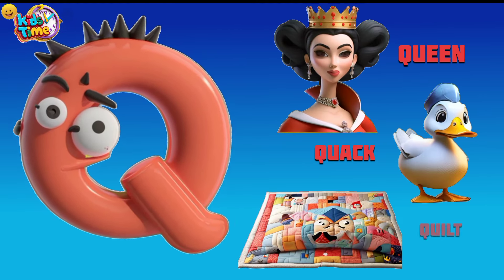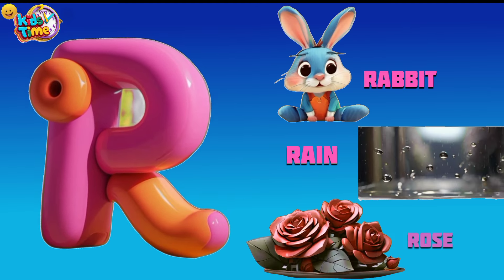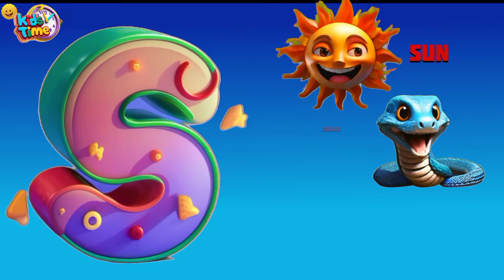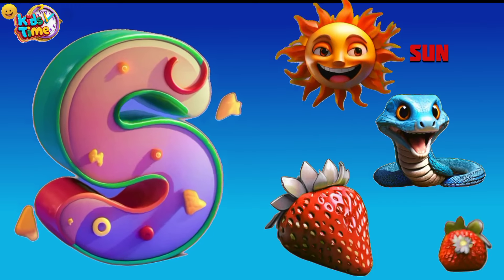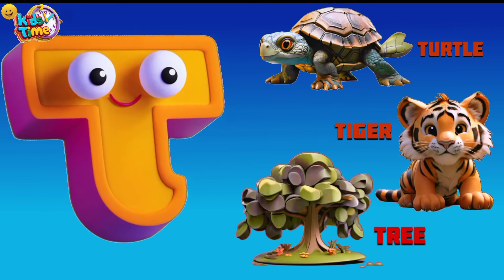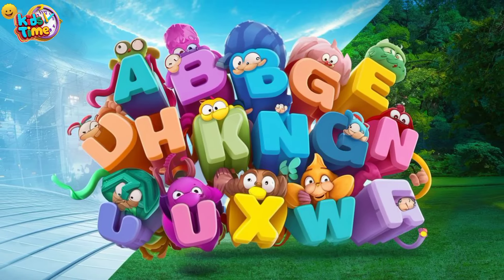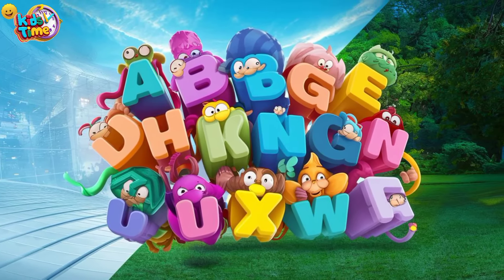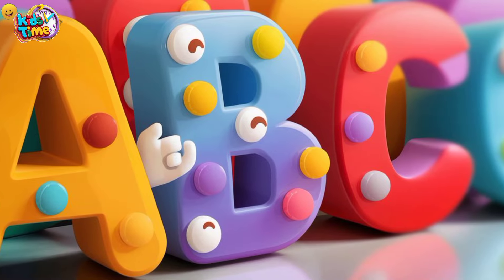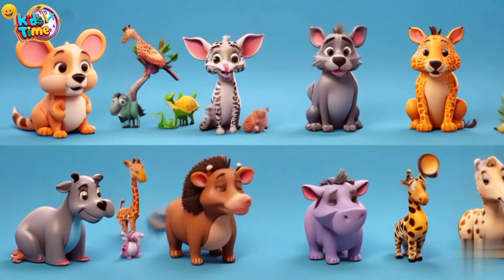Q is for Queen, Quack and Quilt. R is for Rabbit, Rain and Rainbow. S is for Sun, Snake and Strawberry. T is for Turtle, Tiger and Tree.